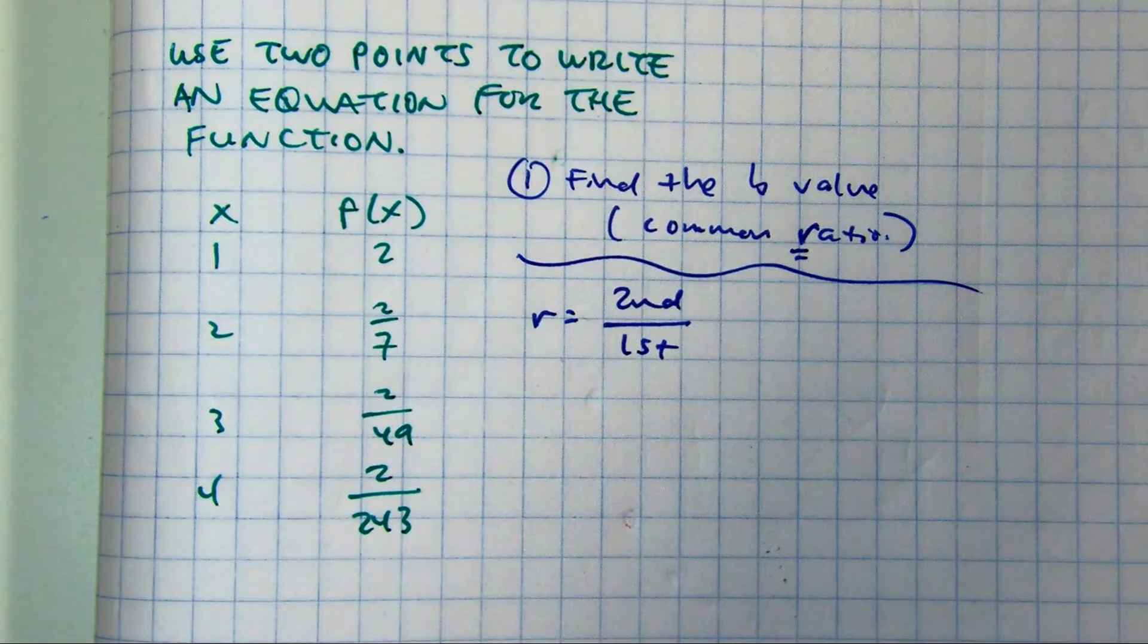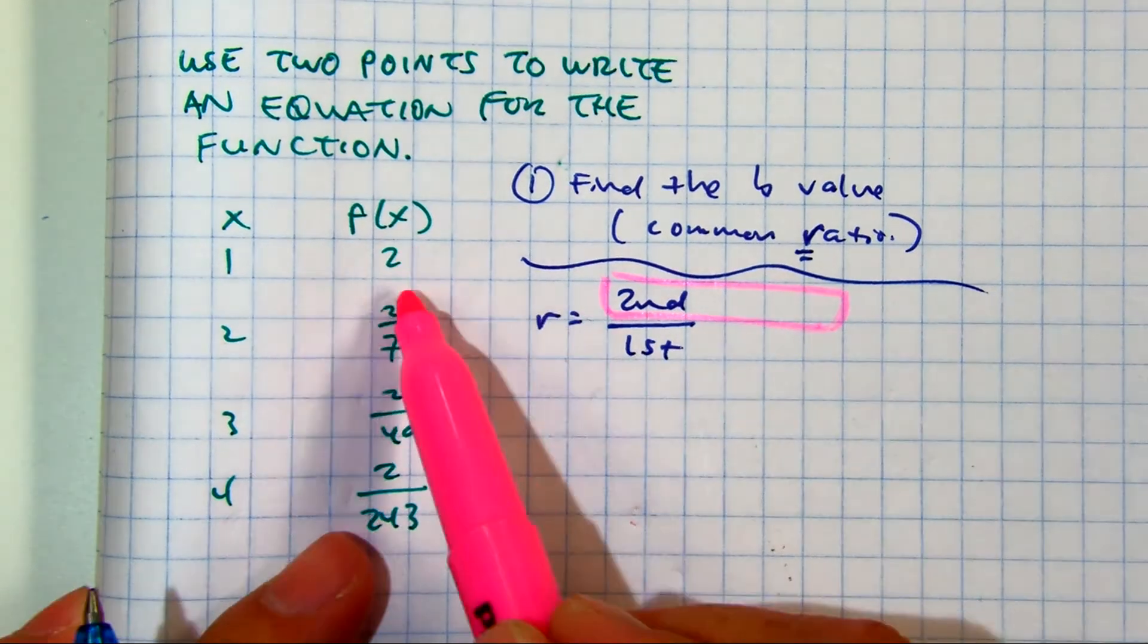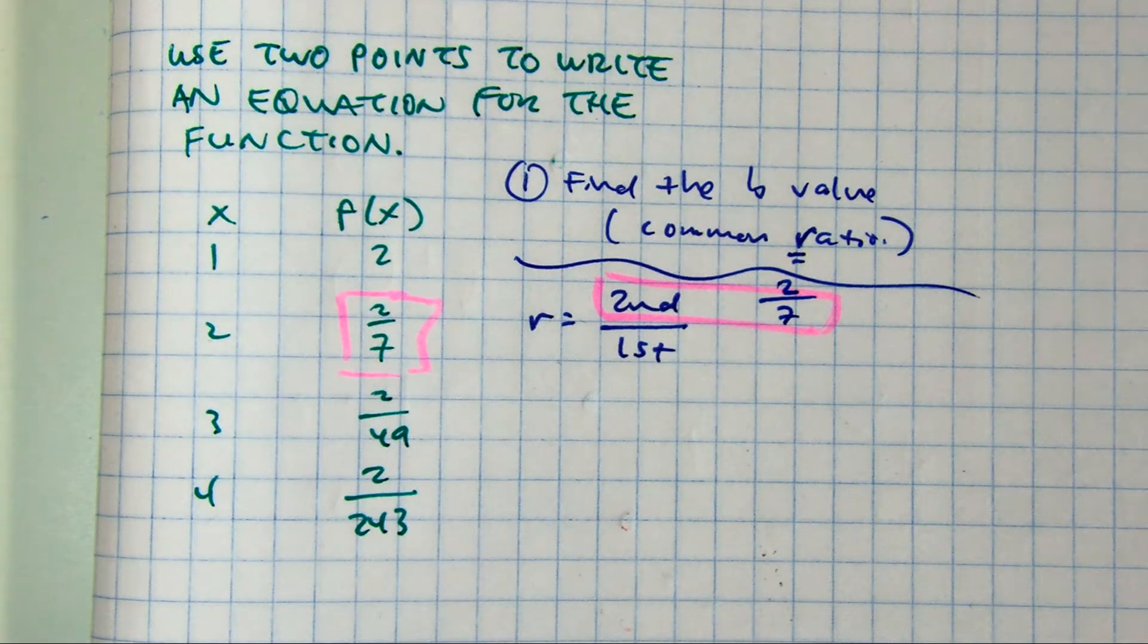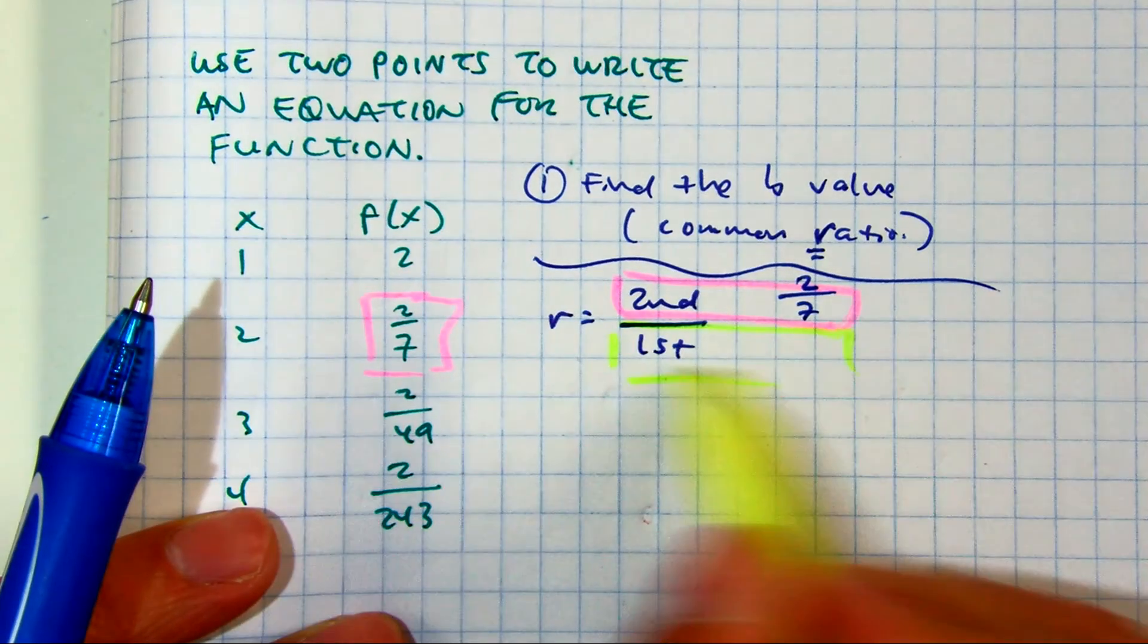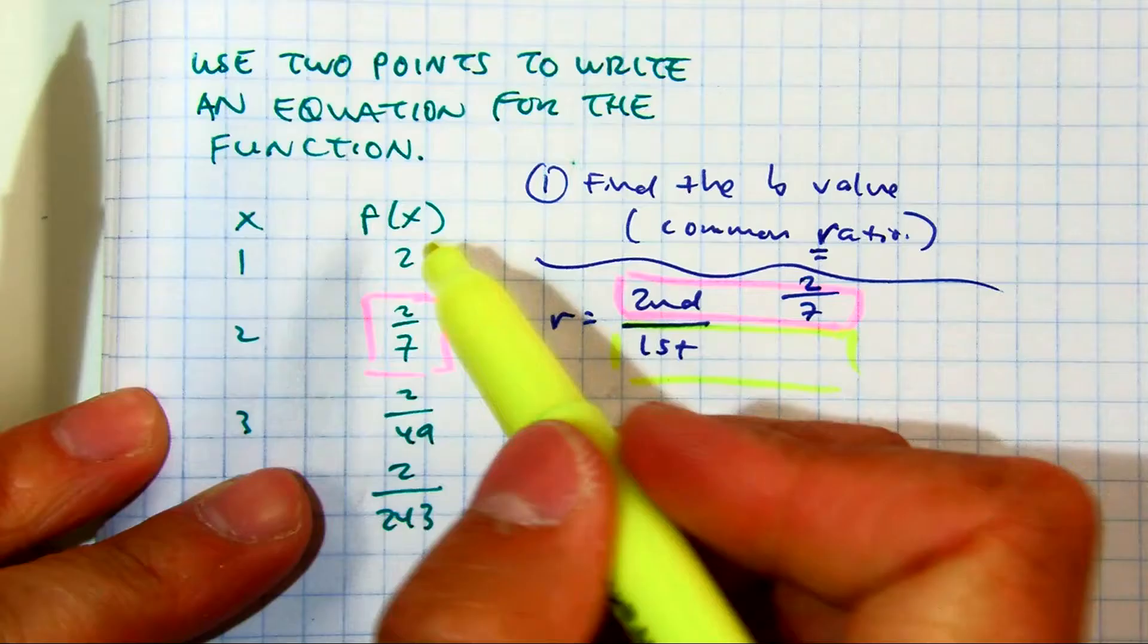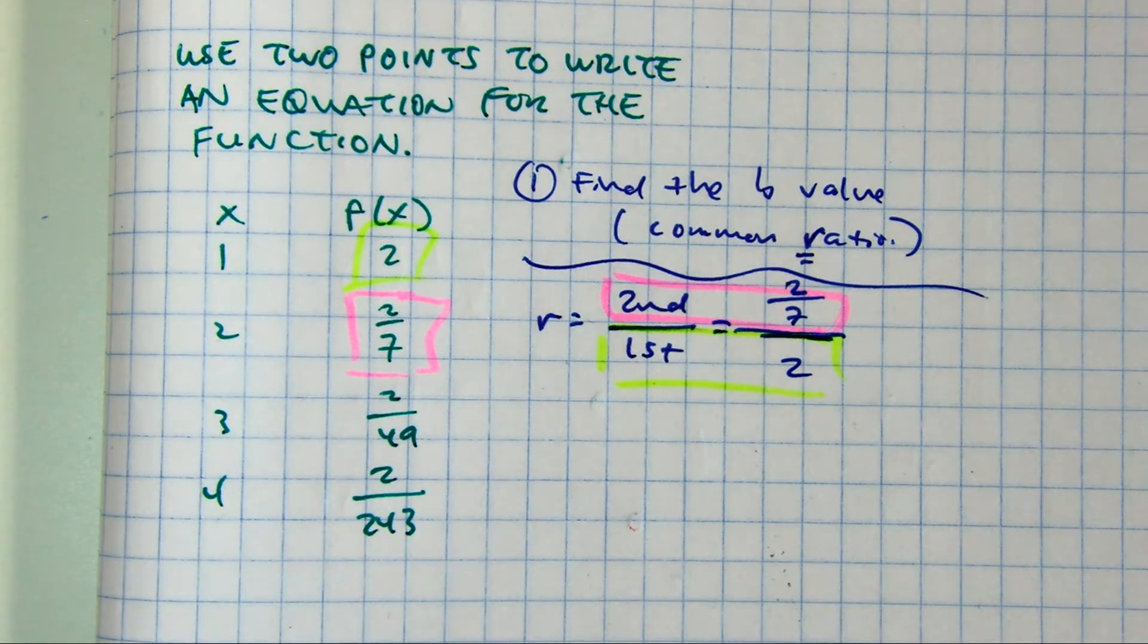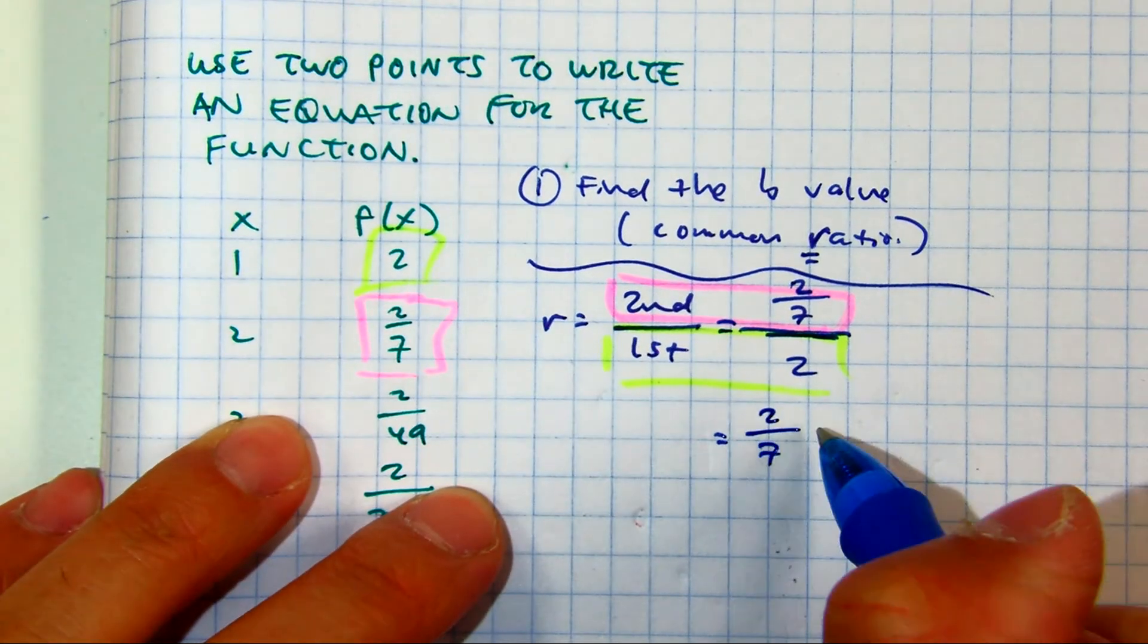The second that I'm talking about is the second Y value. So let's write that. Two sevenths over the first. What is the first Y value in that list? Two. So let's go ahead and simplify. Two sevenths divided by two.